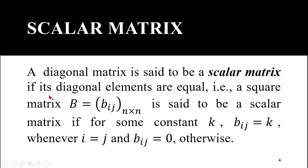Scalar matrix: a diagonal matrix is said to be a scalar matrix if its diagonal elements are equal. A scalar matrix must be a diagonal matrix — it is a square matrix in which all non-diagonal elements are 0. Additionally, a square matrix B equal to b_ij with n rows and columns is a scalar matrix if, for some constant k, b_ij equals k whenever i equals j, and b_ij equals 0 otherwise.